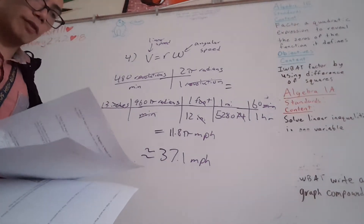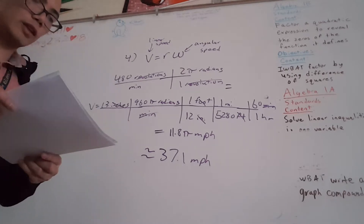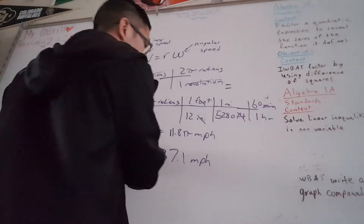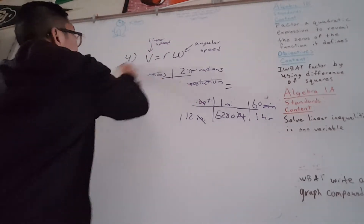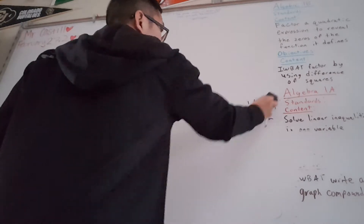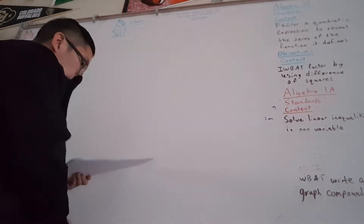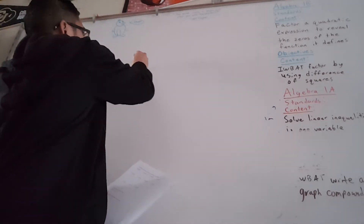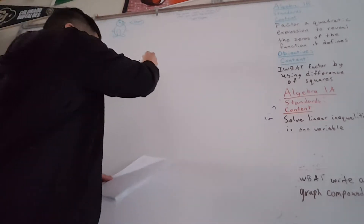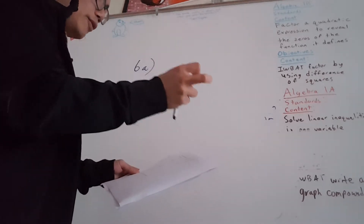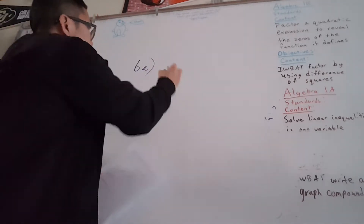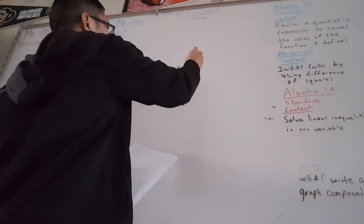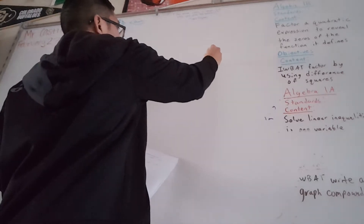I'm going to skip 5 because for 5 you just have to know your unit circle. However, number 6 — let's go over number 6. Number 6 is a composition of functions. We are composing the cosecant and the cosine. So for number 6, letter A: what is f of g? Remember, we take the g function and put it into f. So it's the cosine of the cosecant of x.